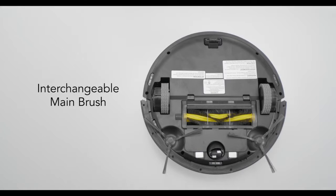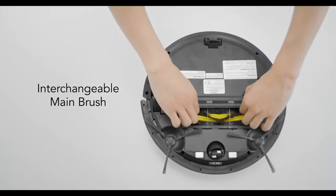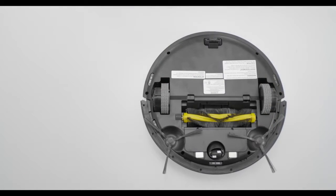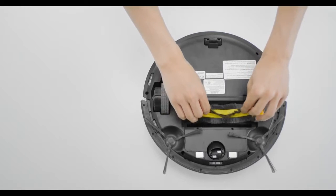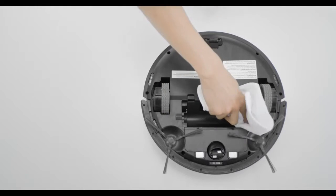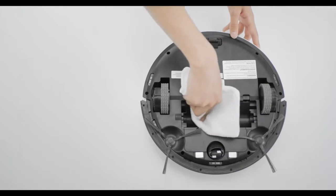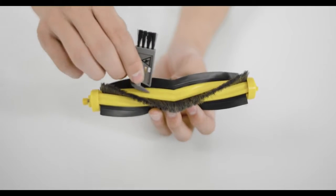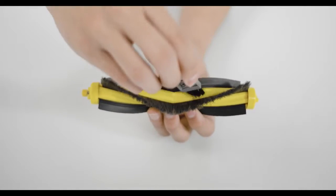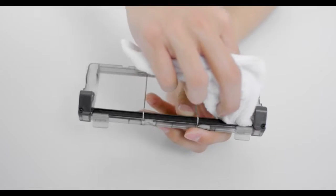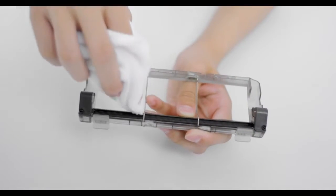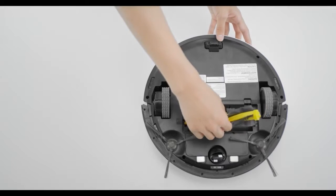If you use the interchangeable main brush option, please clean it once per week. Remove the main brush cover and main brush. Use a dry mop to clean the brush slot. Use the multifunctional tool to remove any hair or other debris. Clean the main brush cover before reinstalling.